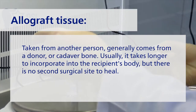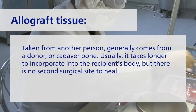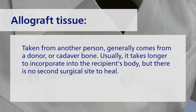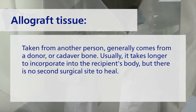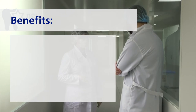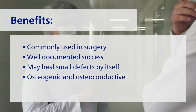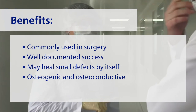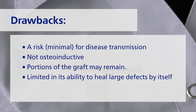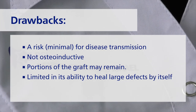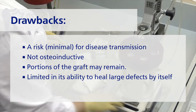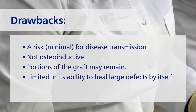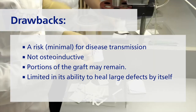Allograft tissue is taken from another person, generally from a donor or cadaver bone. It usually takes longer to incorporate into the recipient's body, but there is no second surgical site to heal. This material is commonly used in surgery, has well-documented success, may heal small defects by itself, and is osteogenic and osteoconductive. Drawbacks include a minimal but real risk of disease transmission, the material not being osteoinductive, defective portions of the graft may remain in the bone permanently, and limited ability to heal large defects by itself.